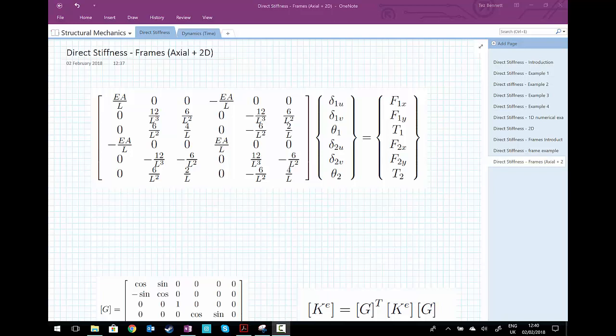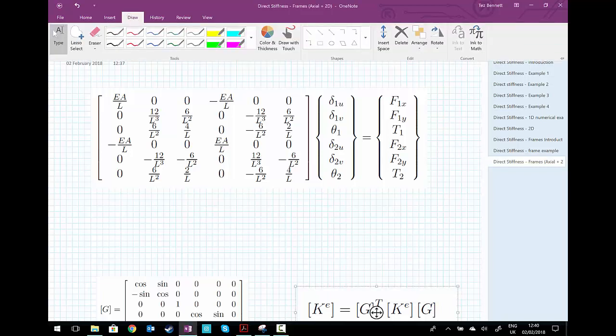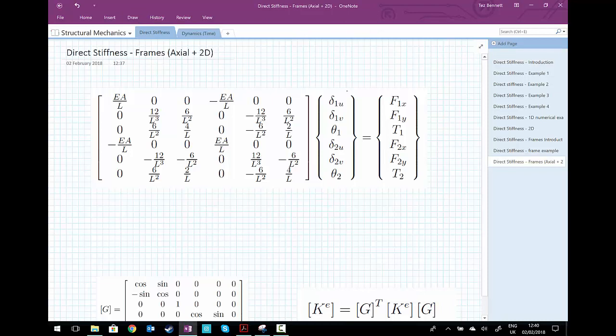what we've got is we've set up our displacement vector or unknown degrees of freedom vector into delta 1 in the direction of the bar, delta 1v is the transverse displacement to the bar, theta 1 rotation of the bar at node 1, and